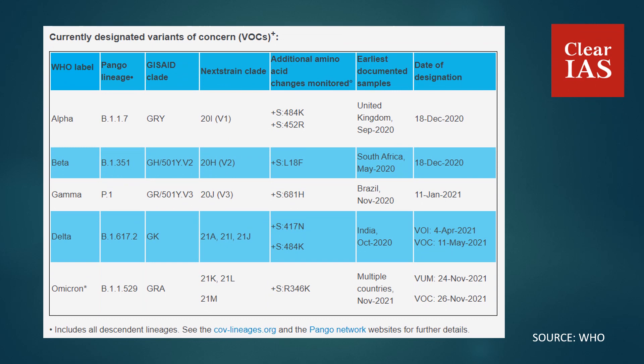So these are the designated variants of concern by WHO: Alpha, Beta, Gamma, Delta and Omicron. However, as per the latest reports, Alpha, Beta and Gamma are now considered as variants being monitored.